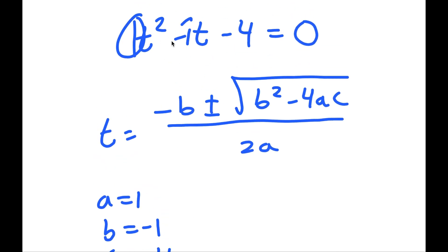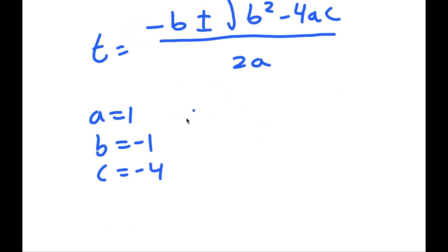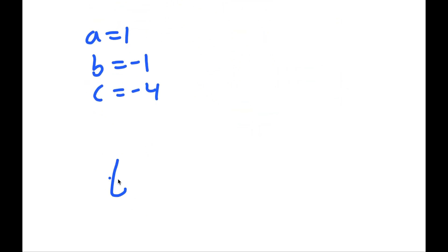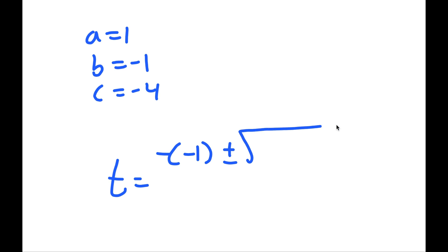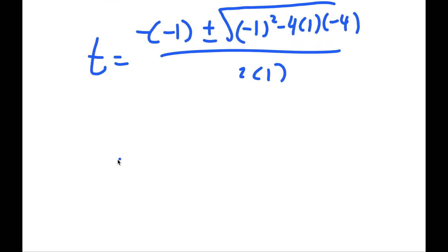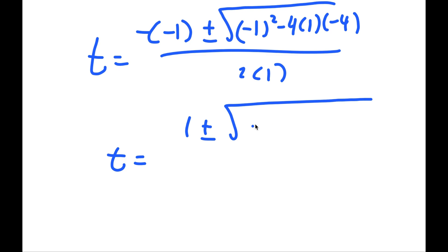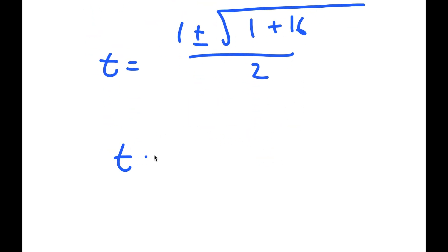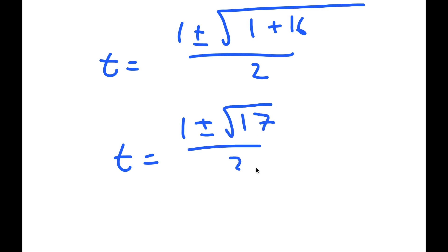So plugging in a = 1, b = negative 1, and c = negative 4, I get negative negative 1 plus or minus the square root of negative 1 squared minus 4 times 1 times negative 4, all over 2 times 1. This is equal to 1 plus or minus the square root of 1 plus 16 over 2, which is equal to 1 plus or minus the square root of 17 over 2.